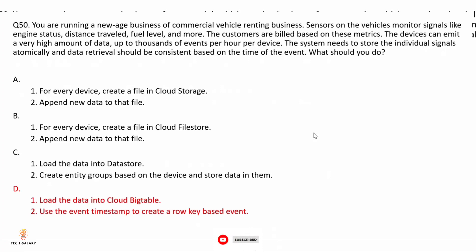Option A: create a file in Cloud Storage for every device and append new data — not correct because Cloud Storage is not the right choice for such high-frequency data. Option B: create a file in Cloud Filestore for every device — Cloud Filestore will not handle large amounts of time-series data. Option C: load data into Datastore and create entity groups — Datastore is not the right choice for this high frequency of data. Option D: load the data into Cloud Bigtable and use the event timestamp to create a row key based on the event. Cloud Bigtable is a petabyte-scale NoSQL database that is very good at storing and analyzing time-series data, so option D is correct.